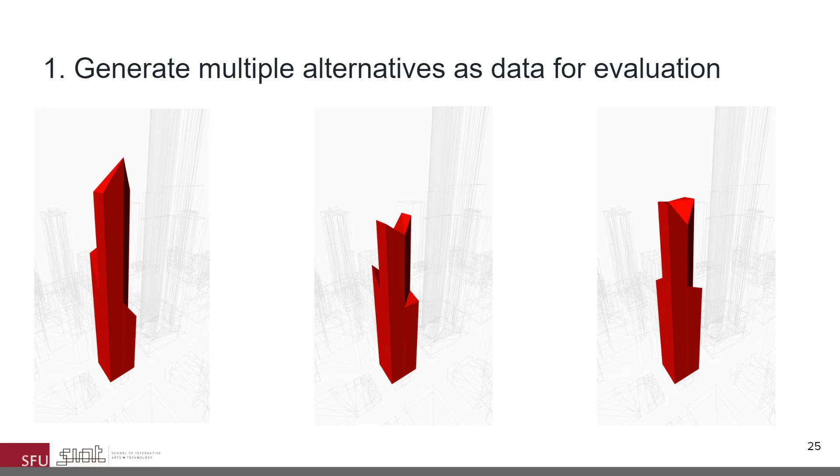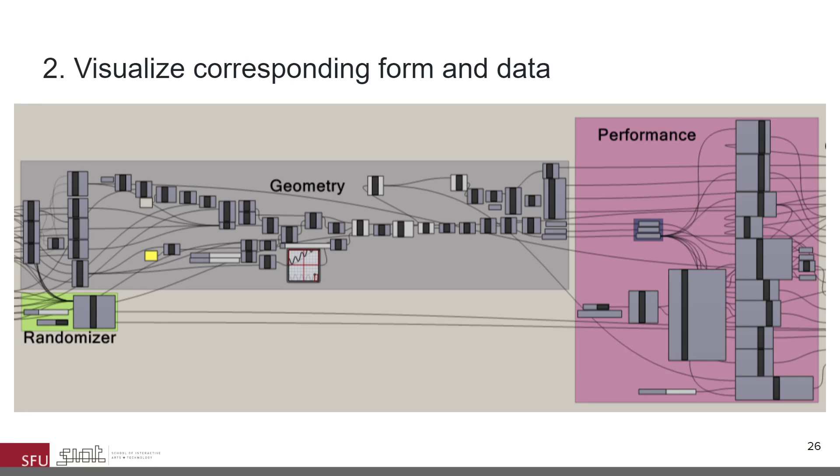First, we have the use of multiple alternatives as data. When we work with a single design alternative at a time, we can only observe problems that the alternative reveals. Observing a pattern is obviously not possible unless we generate many alternatives and use data visualization in which this pattern is visible.